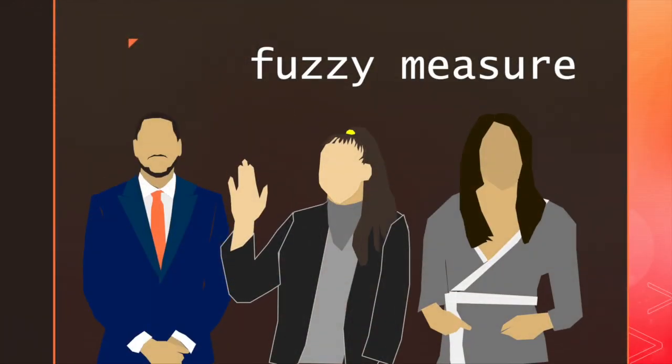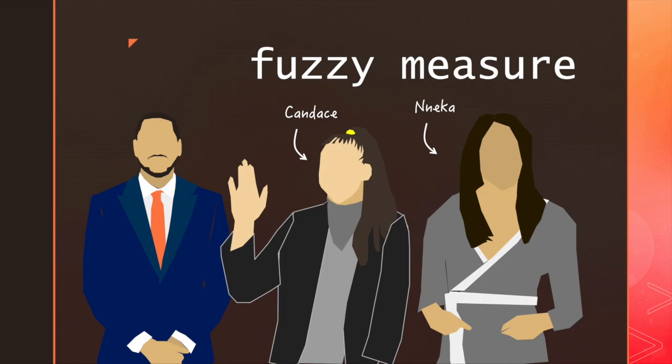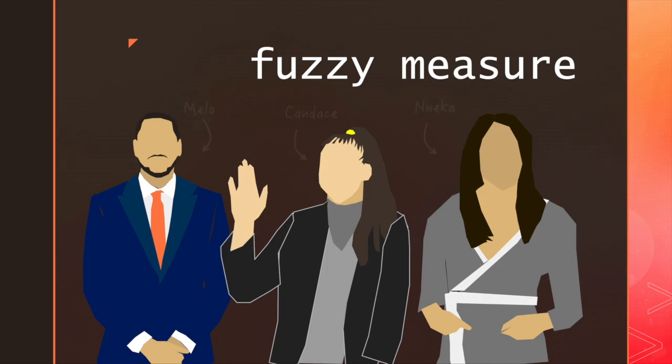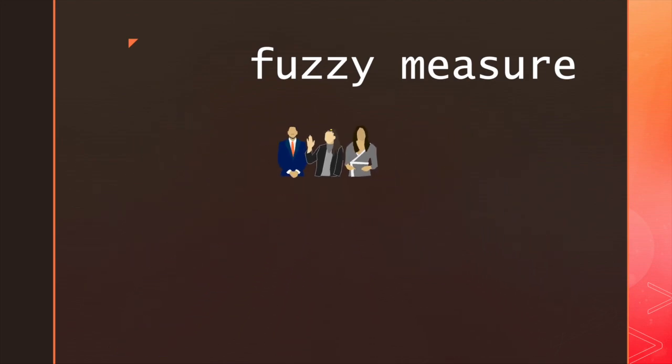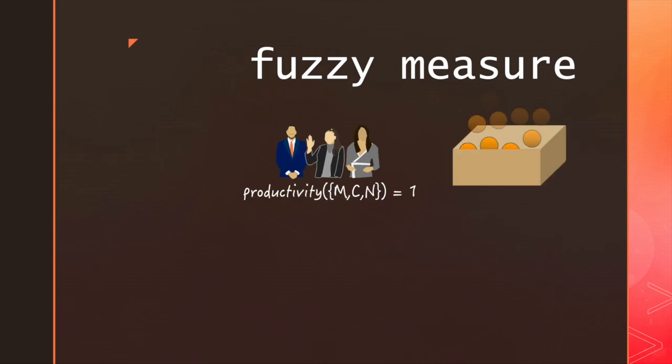A prototypical example runs something like this. Suppose we have three workers and we want to understand their productivity. Let's say together, working for a day, they're able to produce one crate of goods.